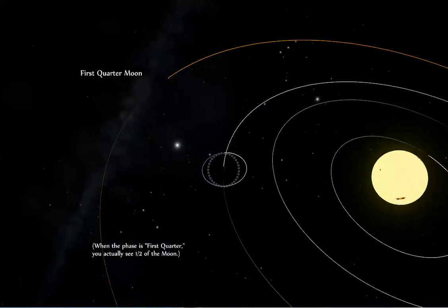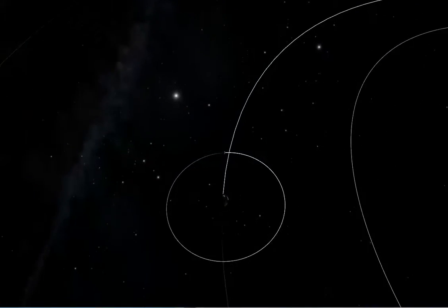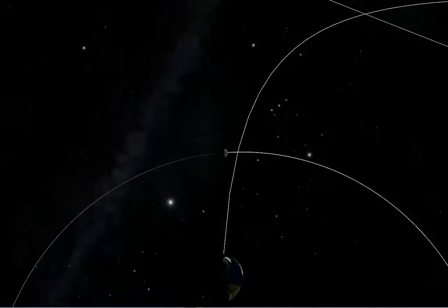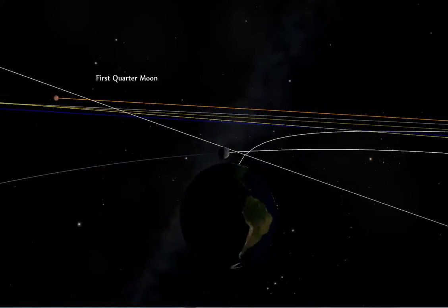But when the phase is first quarter, you actually see one half of the moon. The sun's rays are shining from the right, lighting up the right half. Half of the lit side and half of the dark side are facing Earth. This half-and-half view is called a first quarter moon.